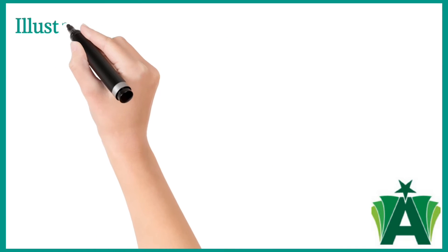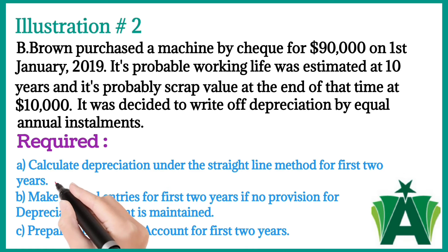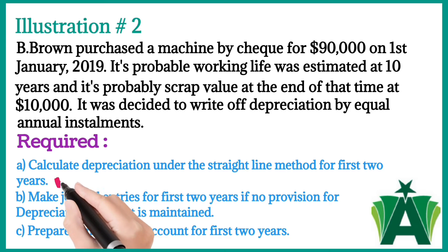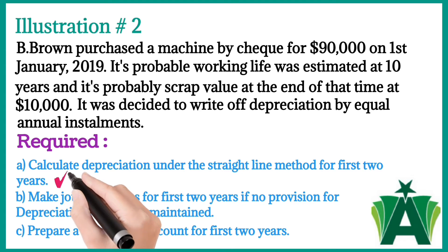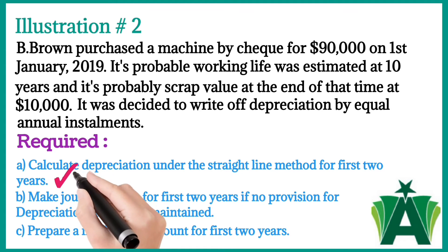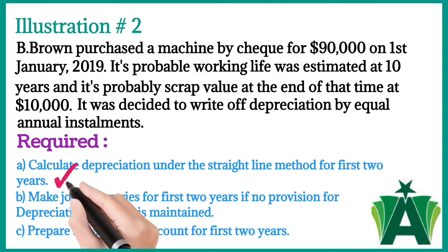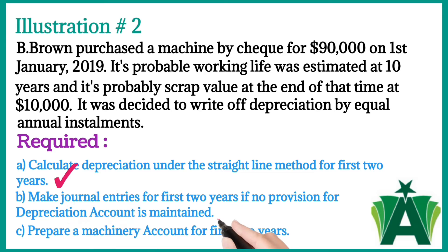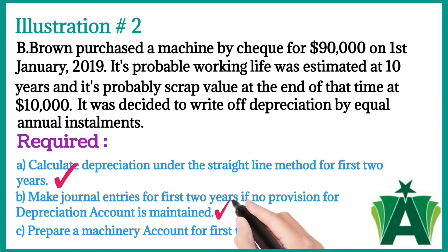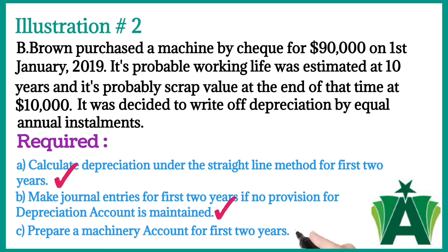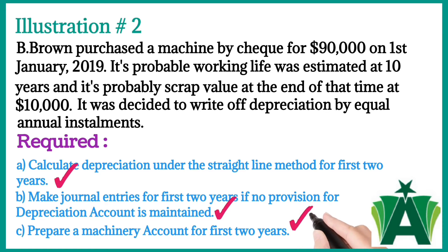In illustration number two, we will calculate depreciation under the straight line method for the first two years, make journal entries for the first two years if no provision for depreciation account is maintained, and prepare a machinery account for the first two years.